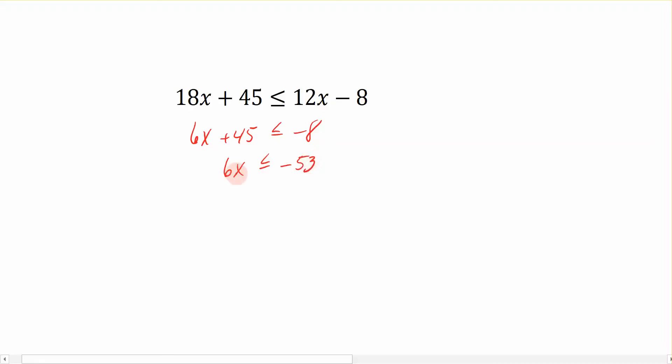We want to get the variable x all by itself, so we're going to divide both sides by a positive 6. This gives me the solution that says x is less than or equal to negative 53 over 6. And I'm going to leave this in the exact answer or as a reduced fraction, which this is reduced.